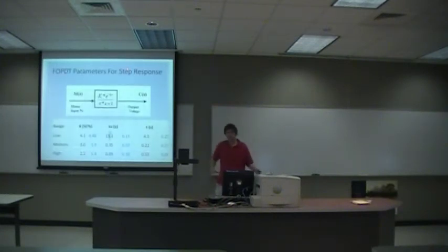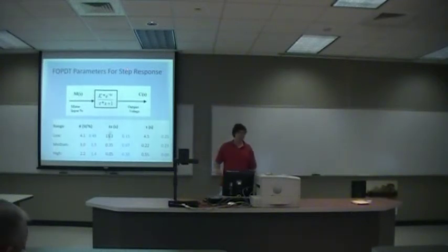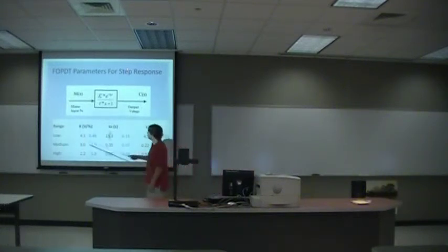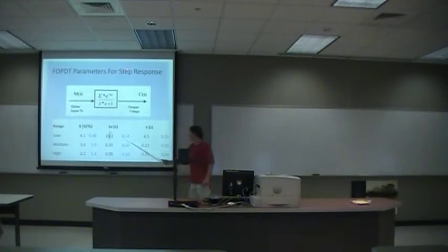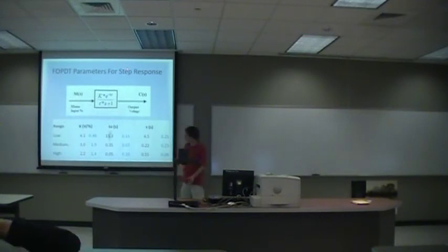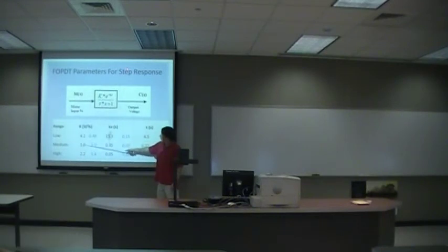We broke the system into three different sections within our constraints, which was between 10 and 70 volts — an input of between 66 and 84 percent — with step up and step down functions. The step up values were higher in every instance. The step down is shown in blue. Also, the gain in the system slowly decreased as the input got higher.